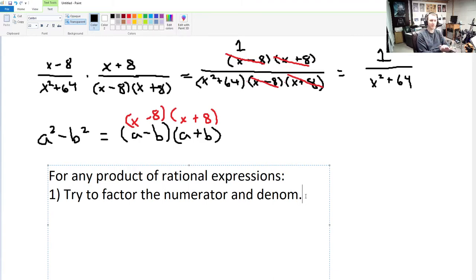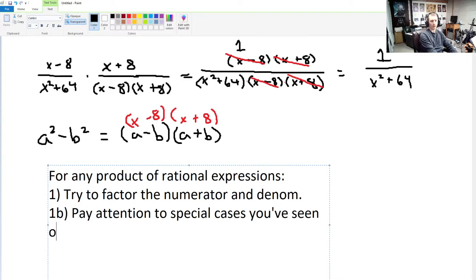And we did that in this problem. We couldn't factor the denominator on the left. We could factor the denominator on the right. The numerators are already factored. Okay? It's just one binomial in either of them. So, we're not going to factor that at all. 1b.